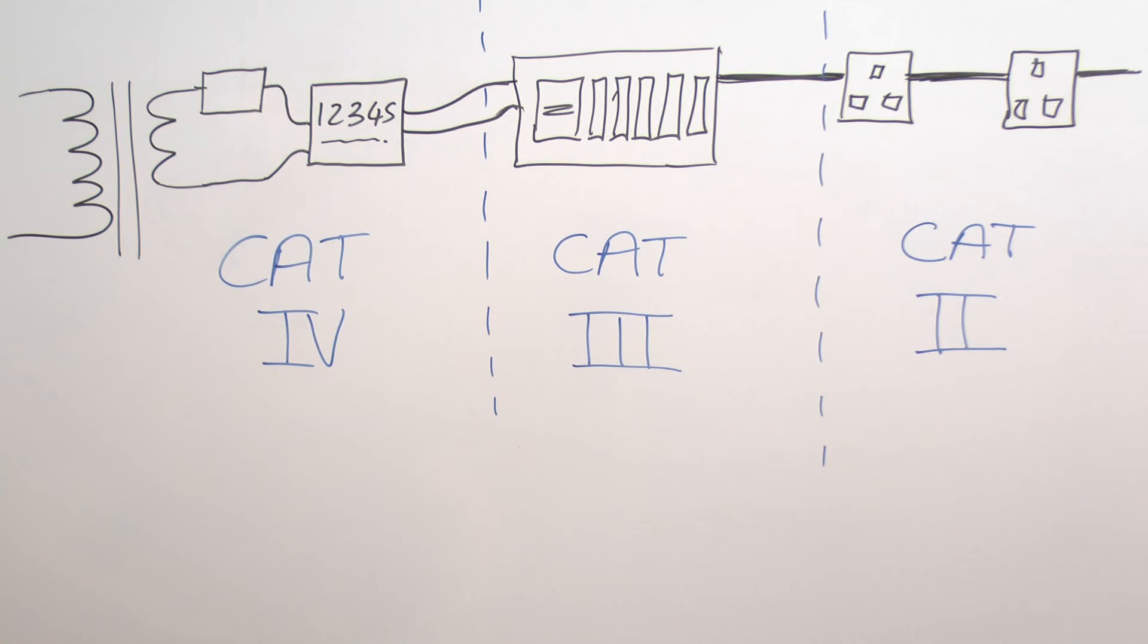And the other point as well is that certainly at this kind of level at the category 4 areas where you've got a substantial amount of fault energy available, it's all very well using the proper test equipment and probes. But certainly here you ought to be wearing protective clothing as well because in the event of some kind of fault you certainly don't want to be exposed to burning metal and large amounts of arc energy. And if you have a look at that video linked in the description you'll see why that's actually important. So face shield and flame proof clothing really are essential when working in this kind of area.